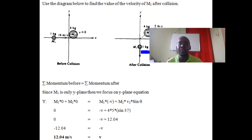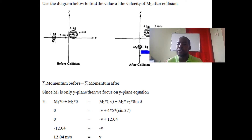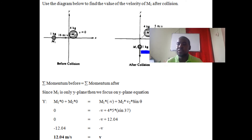For m2, its y-plane velocity is v2 sine theta. Substituting values: m1 is 1, so we get negative v; m2 is 4 times velocity 5 times sine 37 degrees. Multiplying 4 × 5 × sine 37° gives 12.04. Moving 12.04 to the other side makes it negative. Both terms are negative, so dividing by negative one gives v = 12.04 meters per second.